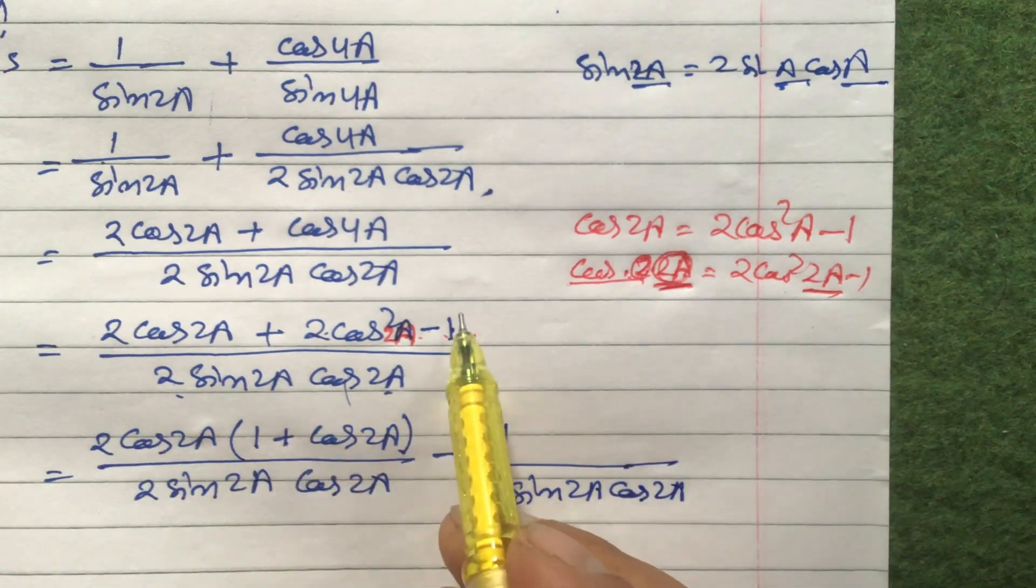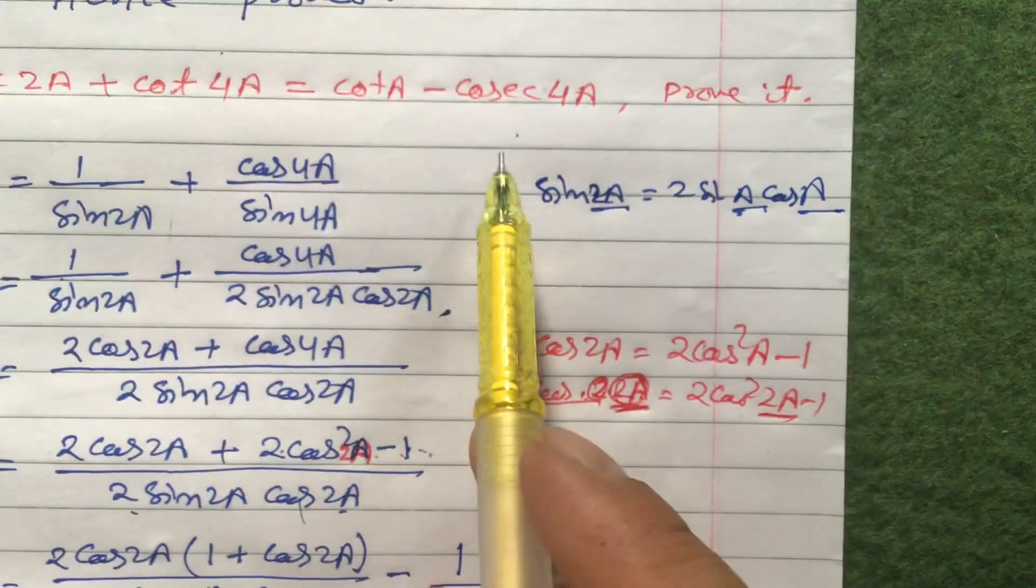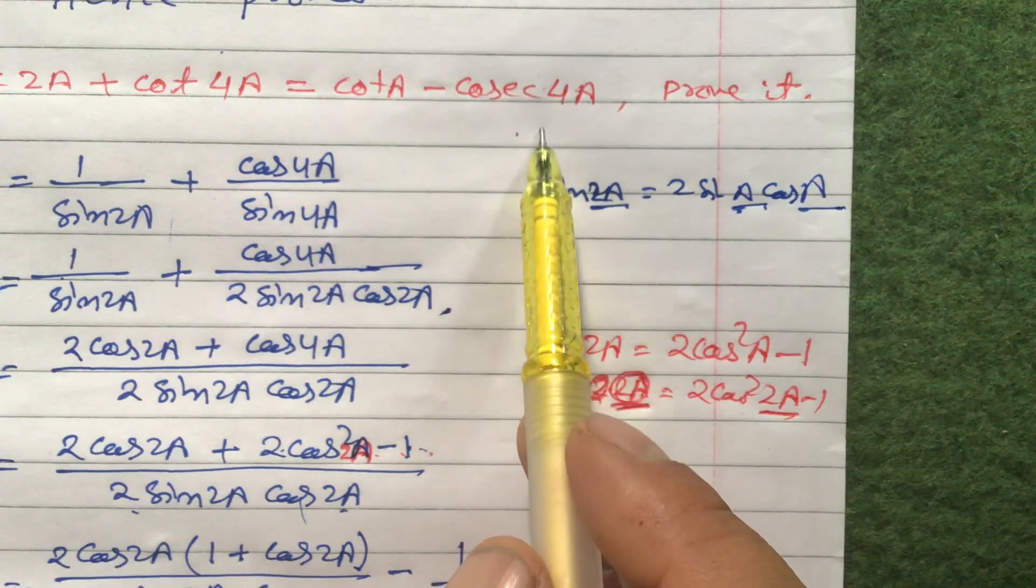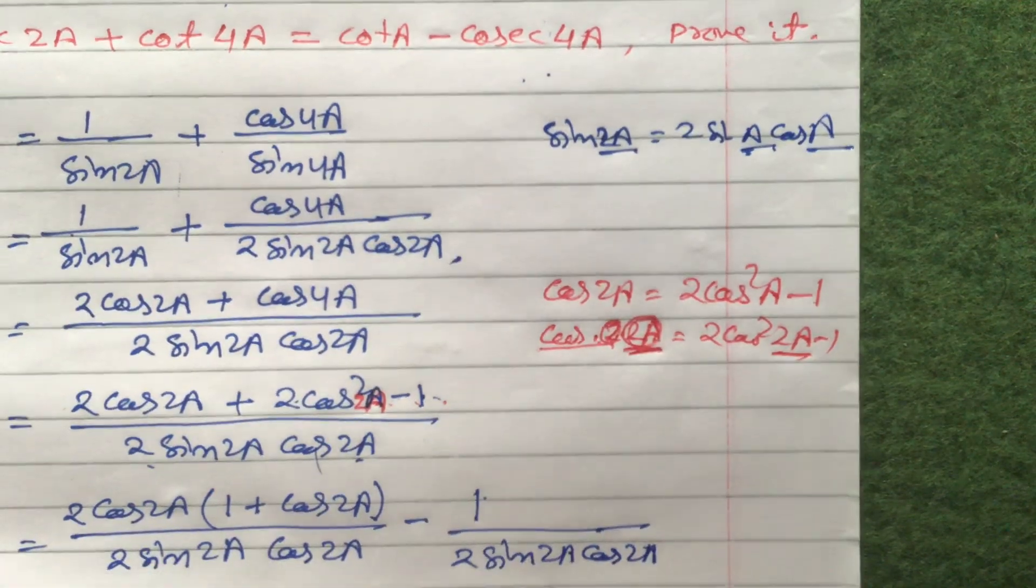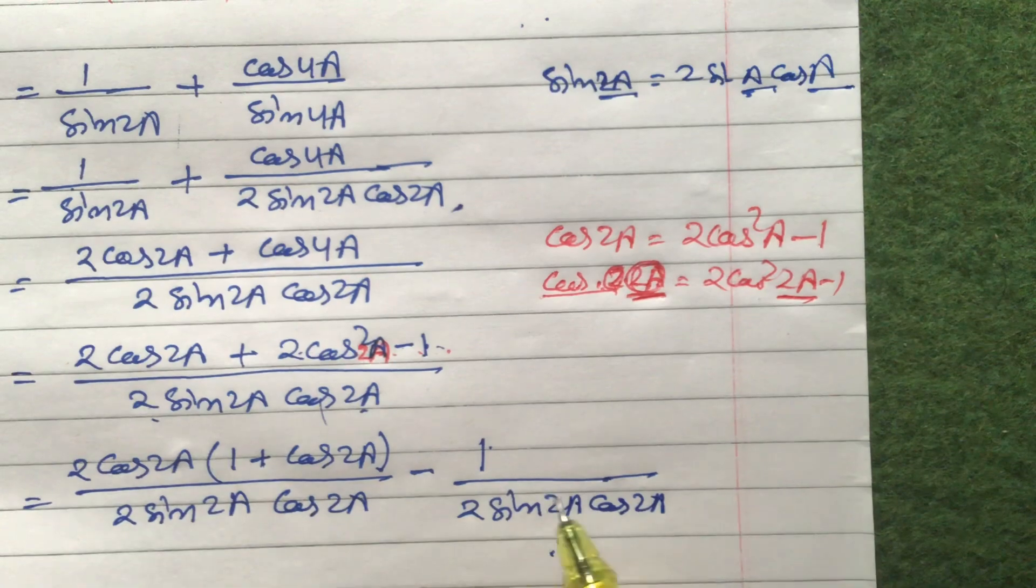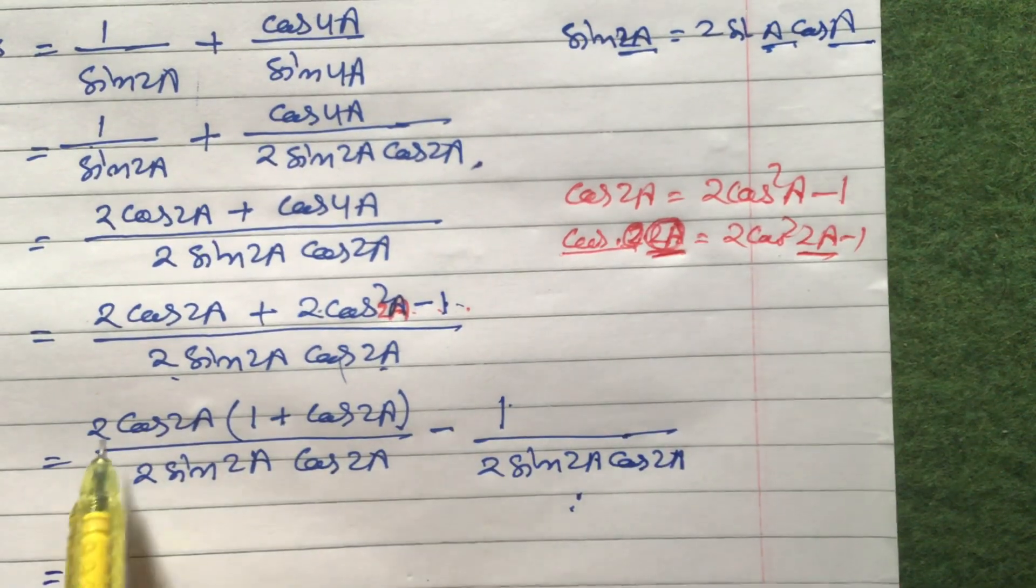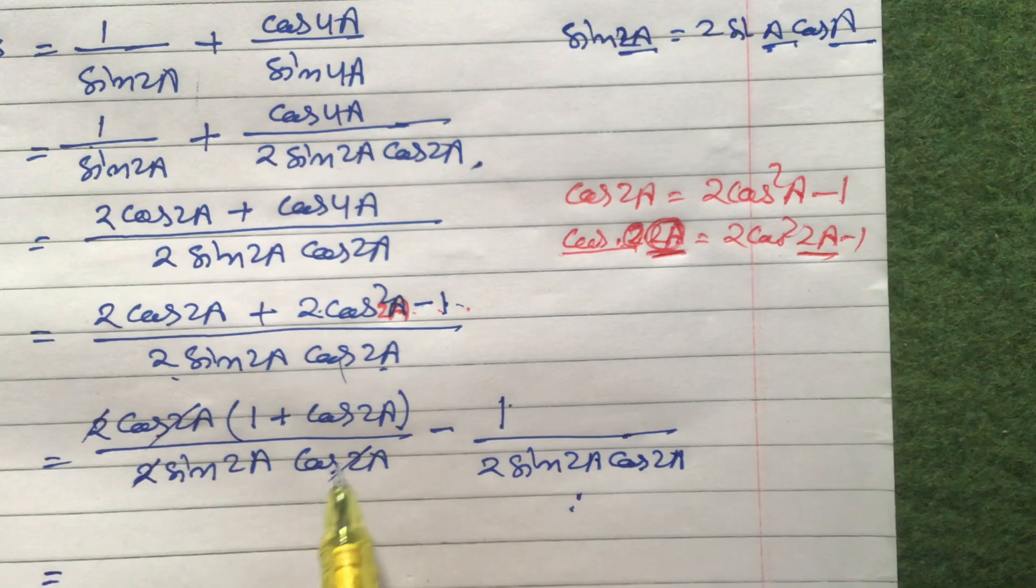We can separate like this because we need to get cot 4a, which means 1 by sin 4a. So 1 by sin 4a we need to get here. That's why we are separating like this. Now here 2 and 2 cancel. Cos 2a and cos 2a cancel.